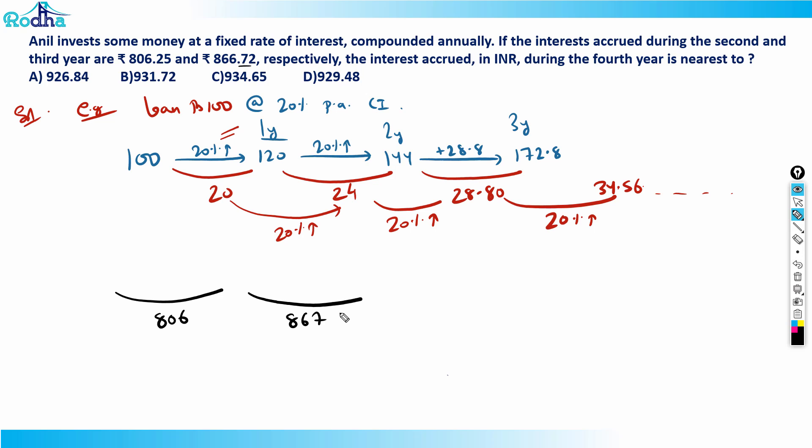Now what is the percentage increase from here to here? The same will be next year also. If this is the increase in second year, if this is the increase in third year, then for the fourth year I can calculate it the same way. Whatever the percent increase, let's say it is x% increase from here to here, so again it should be x% increase from here to here.